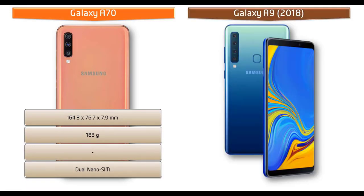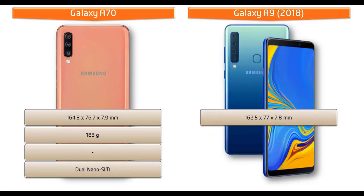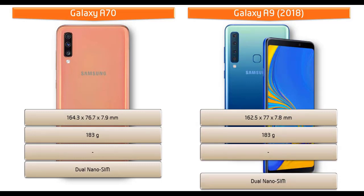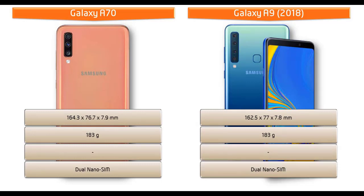Whereas Galaxy A9 measures 162.5 x 77 x 7.8 mm of height, width, and thickness, and comes in at 183 grams of weight with dual nano SIM option.